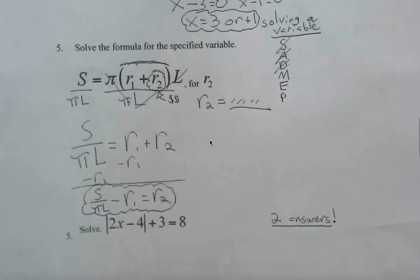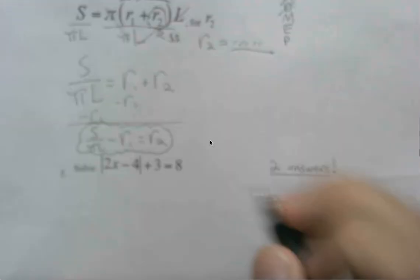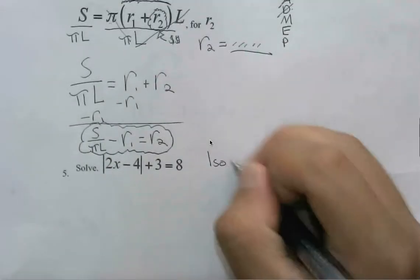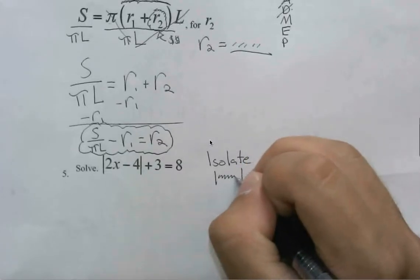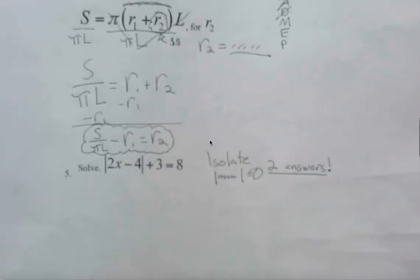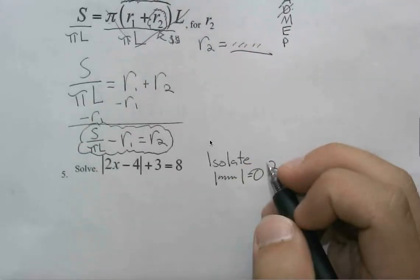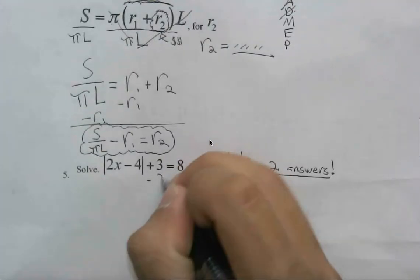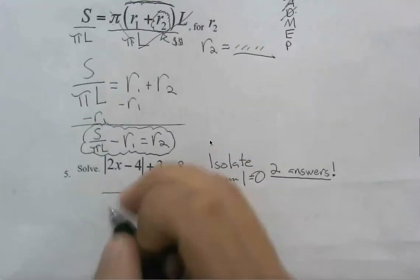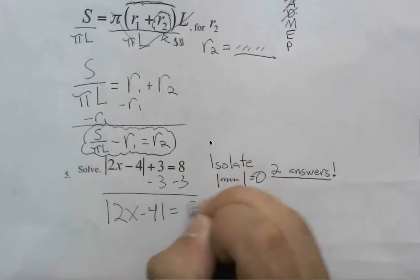If we take this further, this is solving this absolute value equation where we're going to be isolating the absolute value. We're then going to be checking for two answers. So if we isolate this absolute value, getting rid of this 3, we have the absolute value of 2x minus 4 equals 5.